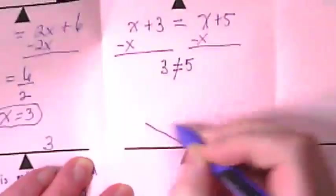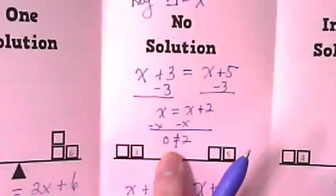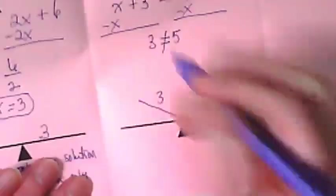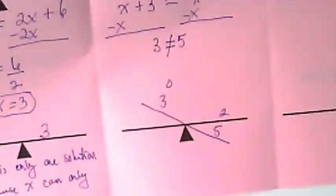And instead of a scale down here that's balanced, we would have 3 here and 5 here. Or, up here we had 0 and 2. Or we could say 0 and 2.